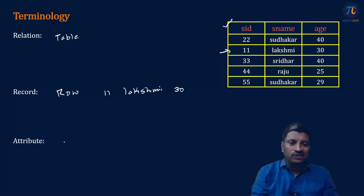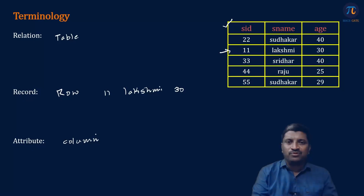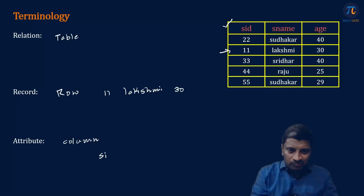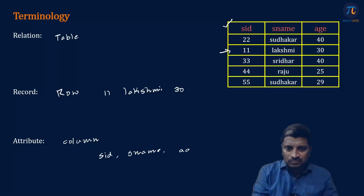What is an attribute? A column of a table is called an attribute. In this example, how many attributes do we have? We have three attributes: SID, SNAME, and age.